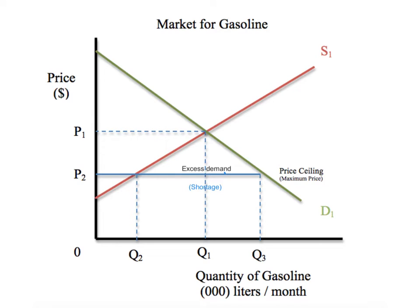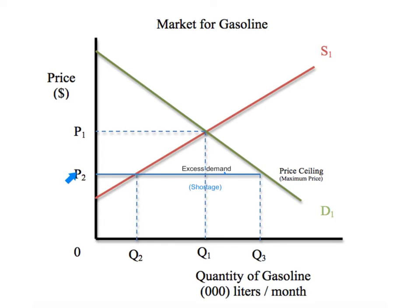In this case we're dealing with a price ceiling — a situation where the government has gotten involved and set a maximum price, in this case in the market for gasoline. The original equilibrium price was P1, Q1. Then the event happens: the government gets involved and implements a ceiling at P2. Maximum prices are usually set to protect consumers and are normally imposed in markets where the product is a necessity or a merit good. The government is interested in making sure consumers can afford gasoline, so they've set a maximum price below the equilibrium price.